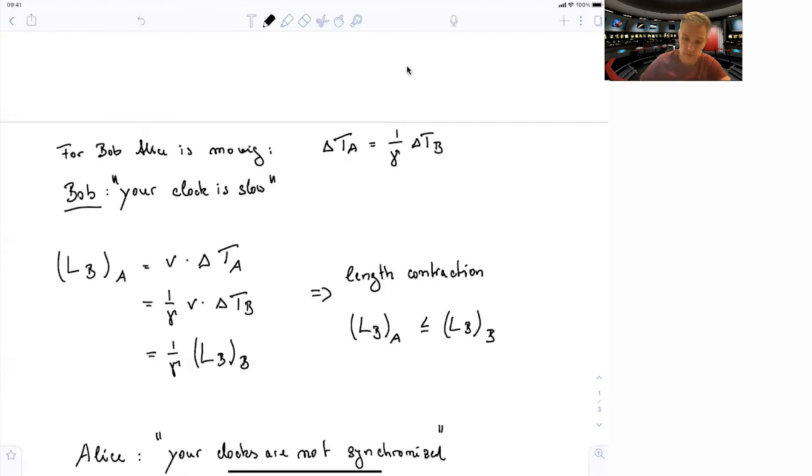And we just use the time dilation here in this equation. And we find that the lengths are actually not the same. So the length as Alice sees is 1 over gamma times the length as Bob sees of the very same spacecraft. So the lengths of the spacecraft are not the same as seen by Alice and seen by Bob.